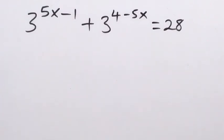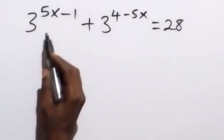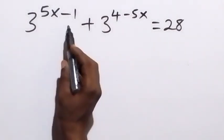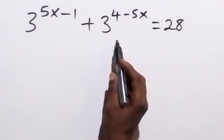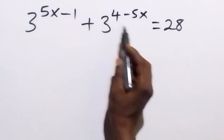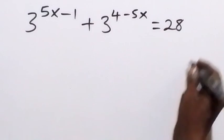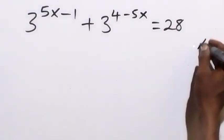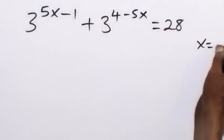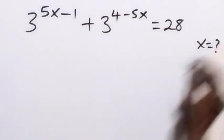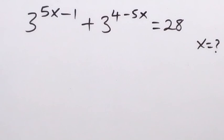Hello, you are welcome. We are going to solve this problem: 3 raised to power (5x minus 1) plus 3 raised to power (4 minus 5x) equals 28. Here we are finding the value of x.